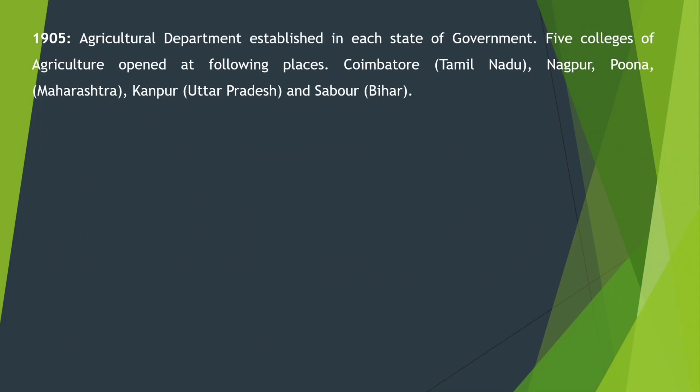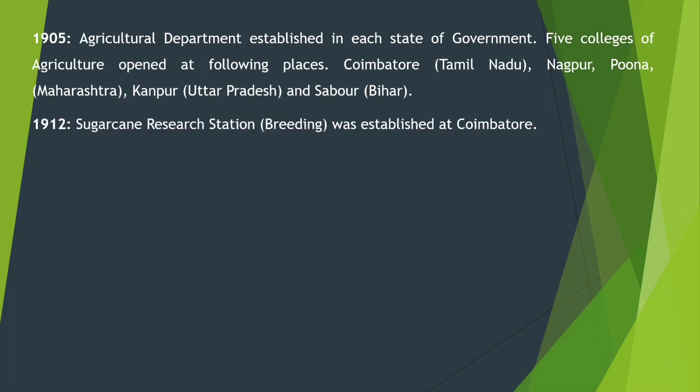In 1905, state governments ने बहुत सारे agriculture departments established किए। Five colleges of agriculture opened at the following places: Tamil Nadu (Coimbatore), Nagpur, Pune (Maharashtra), Kanpur (Uttar Pradesh), and Bihar — ये पांच सबसे पहले agriculture colleges थे।